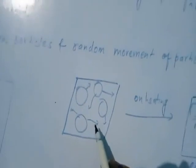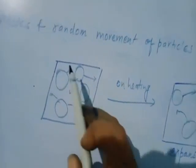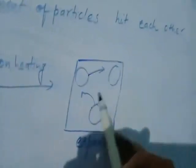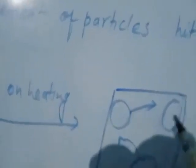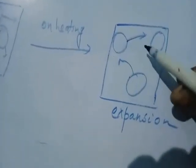The next property is that the rate of diffusion in gases is faster than in liquid and solid, because of the high speed of particles and large spaces between particles in gases. On heating, the vibration of gas particles increases and gas expands. You can see in the diagram that the gas particles are moving faster, and on heating they become more far away from each other with more empty spaces between them.